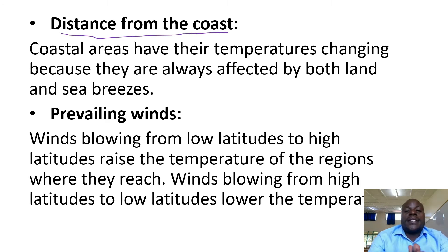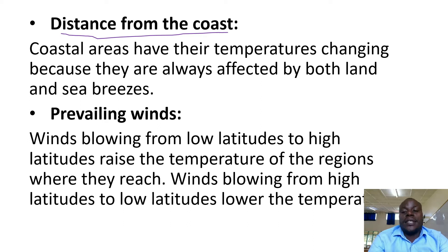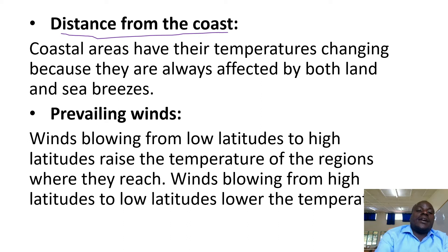Coastal areas have their temperatures changing because they are always affected by both land breeze and sea breeze. The exchange of cold air from the sea to the land and from the land to the sea, because of different pressure zones, brings a difference in temperature either on land or on the sea.